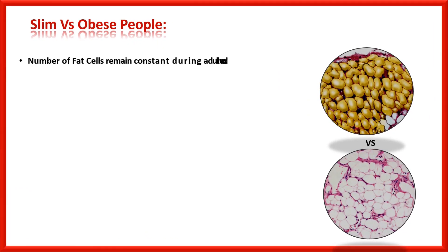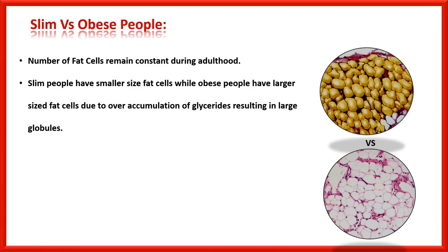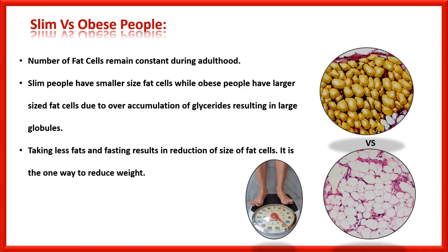Regarding slim versus obese people: the number of fat cells remains constant during adulthood. Slim people have smaller-sized fat cells, while obese people have larger-sized fat cells due to over-accumulation of glycerides resulting in large globules — that is the reason behind obesity. Taking less fat and fasting results in reduction of the size of fat cells, and that is one way to reduce weight.